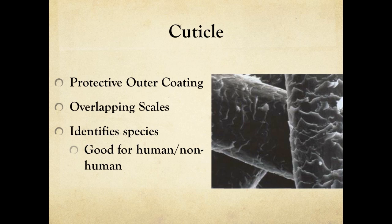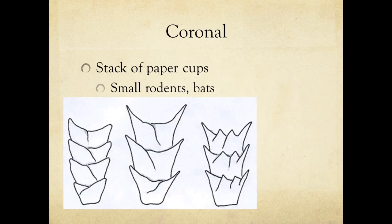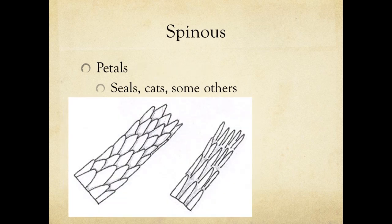There are three main cuticle patterns: coronal, spinous, and imbricate. Coronal cuticle patterns look like stacked paper cups, and they are common in small rodents and bats. Spinous cuticle patterns look like flower petals. This pattern is visible in cats, among other species.